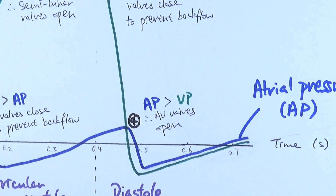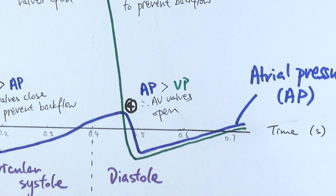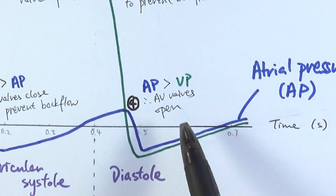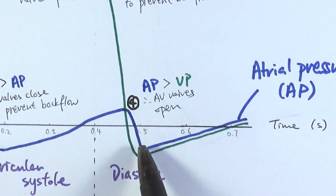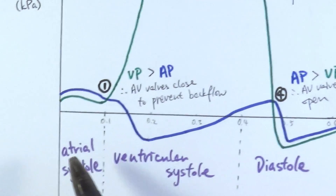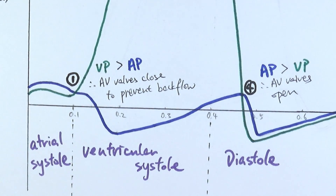The ventricular pressure keeps dropping until it falls below the atrial pressure. At that point, the atrial pressure is higher than ventricular pressure, so blood flows naturally from the atria into the ventricles. The atrioventricular valves open to allow this. It's important to note that this isn't due to atrial systole — the whole heart is still relaxing — it's simply that blood is continuously flowing in, building atrial pressure until it naturally forces the valves open and blood enters the ventricles too.